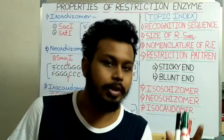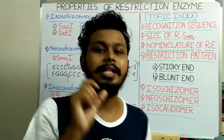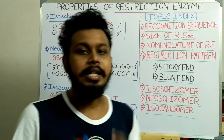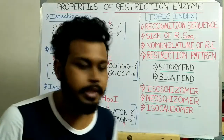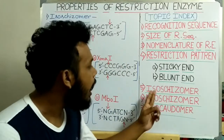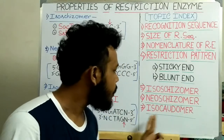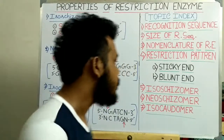Depending on the source and cleavage action, the restriction enzymes are differentiated into three types: the isoschizomer, neoschizomer, and isocaudomers.